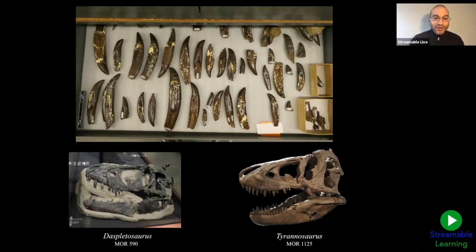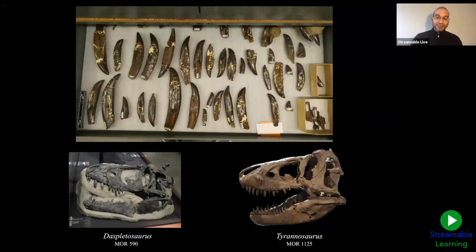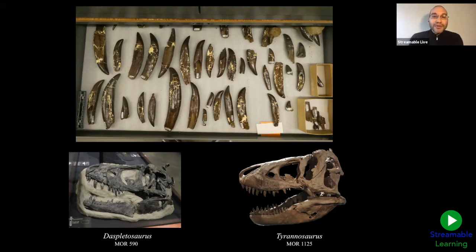We can compare this Tyrannosaurus rex to another tyrannosaur — Daspletosaurus, a cousin of T-Rex that also lived in Montana but about seven million years before T-Rex. Some paleontologists focus their studies on a particular group of animals, like tyrannosaurs, spending a lot of time comparing different species to one another — seeing how they're related, how they might have evolved, and all kinds of questions that can be answered just by comparing the bones of different specimens.